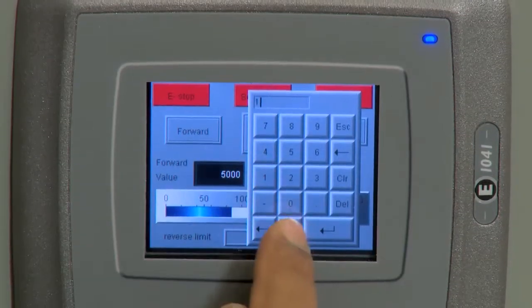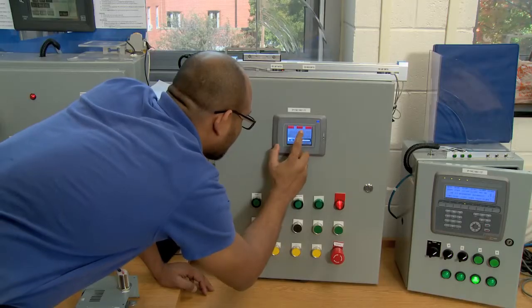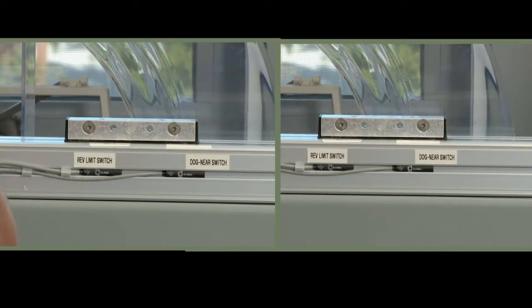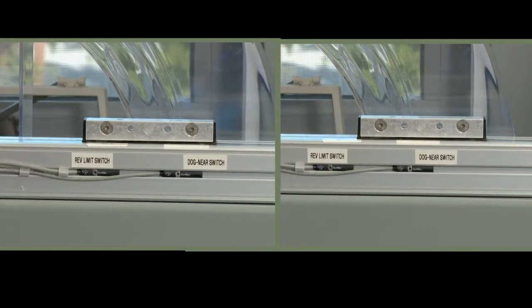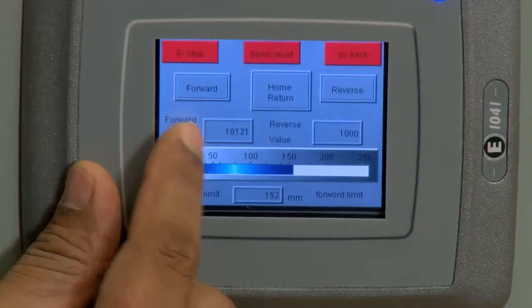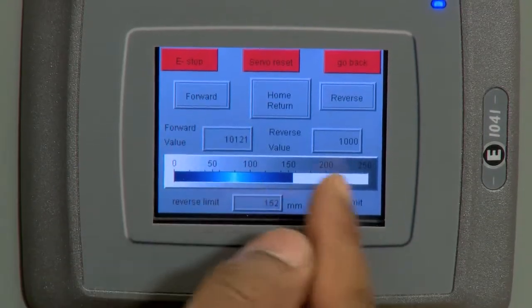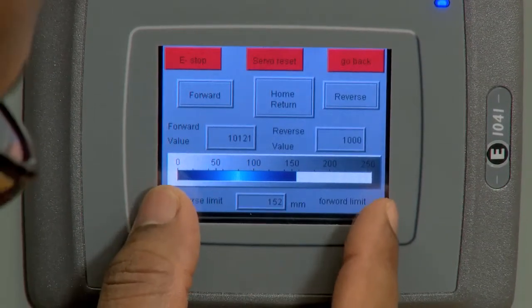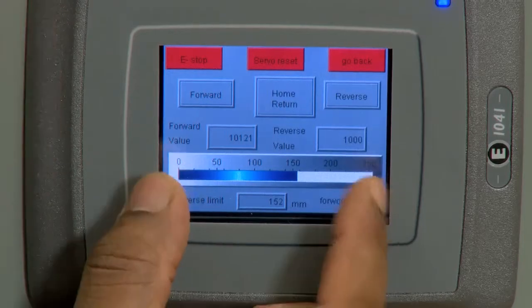If I put double the amount and press forward, it's going to move by double. Every time I change the number, it's going to move accordingly. The scale is 250 millimeters. This is a project that has multiple levels of programming in it.